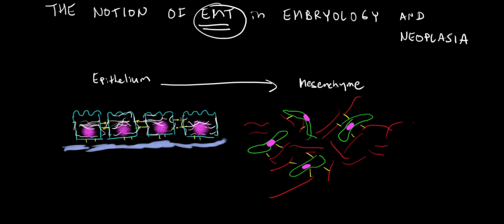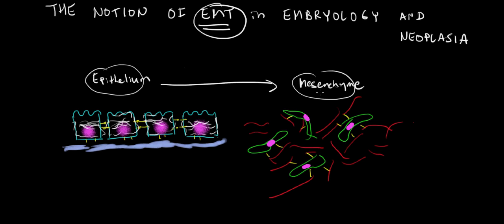Epithelium and mesenchyme are two different types of subsets of cells in our body. Epithelium is the type of cells that line things — lining the skin surface, that's a form of epithelium, that's the epidermis; lining the trachea, lining the digestive tract. Cells that line structures are called epithelium, whereas cells that form the connective tissue of our body are referred to as the mesenchyme. Things like cartilage, bone, fibrous connective tissue — that's mesenchyme.